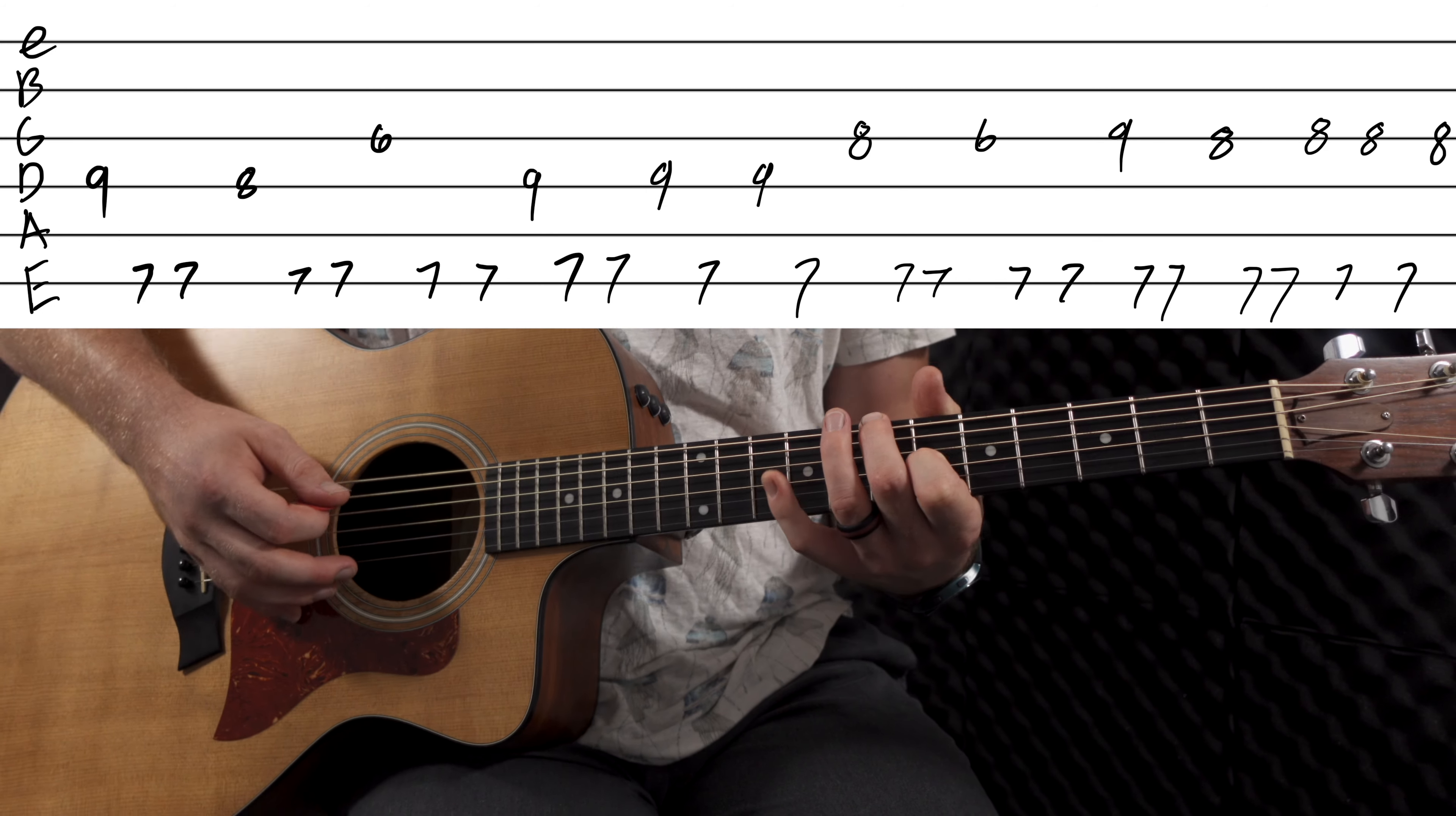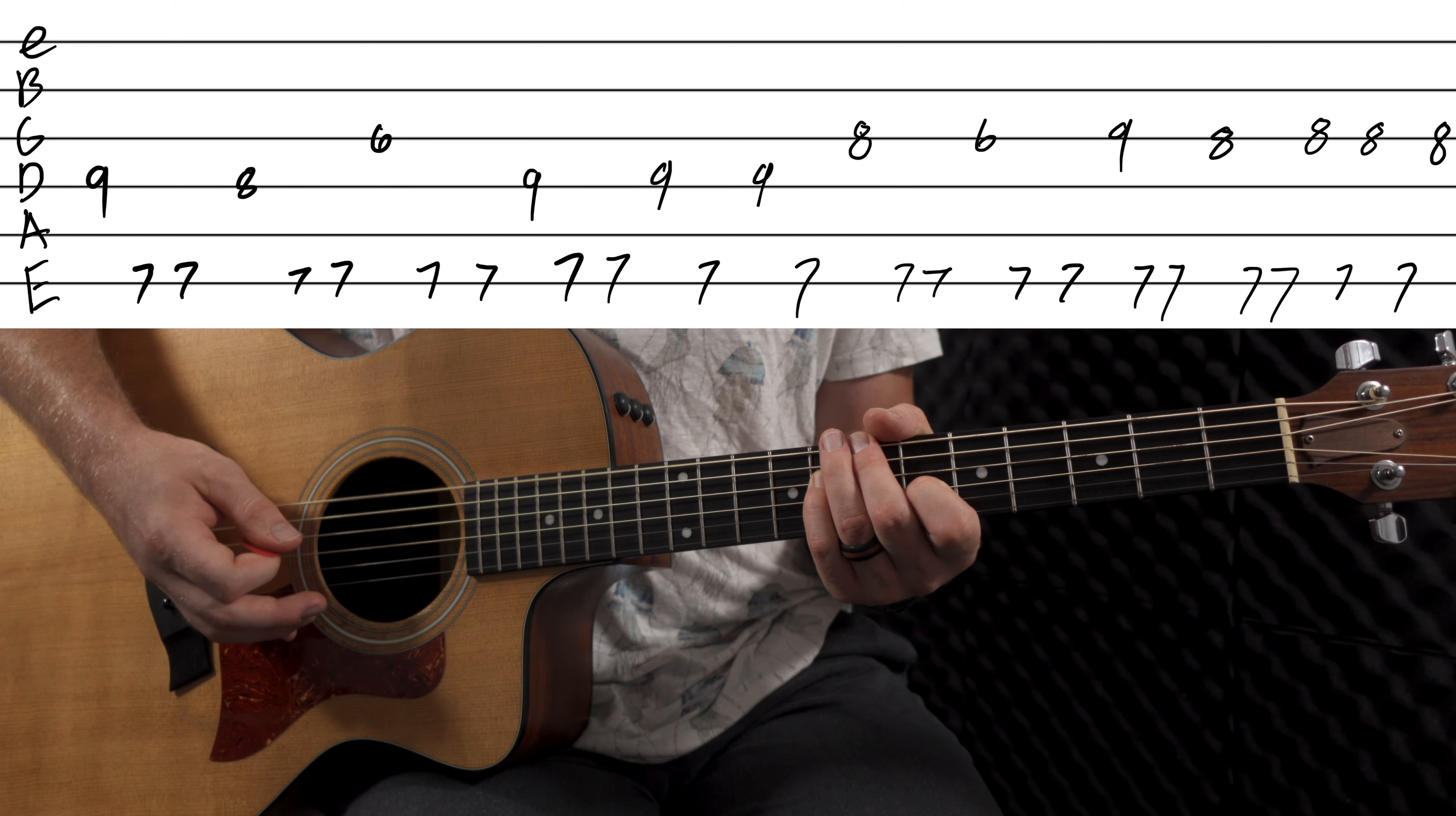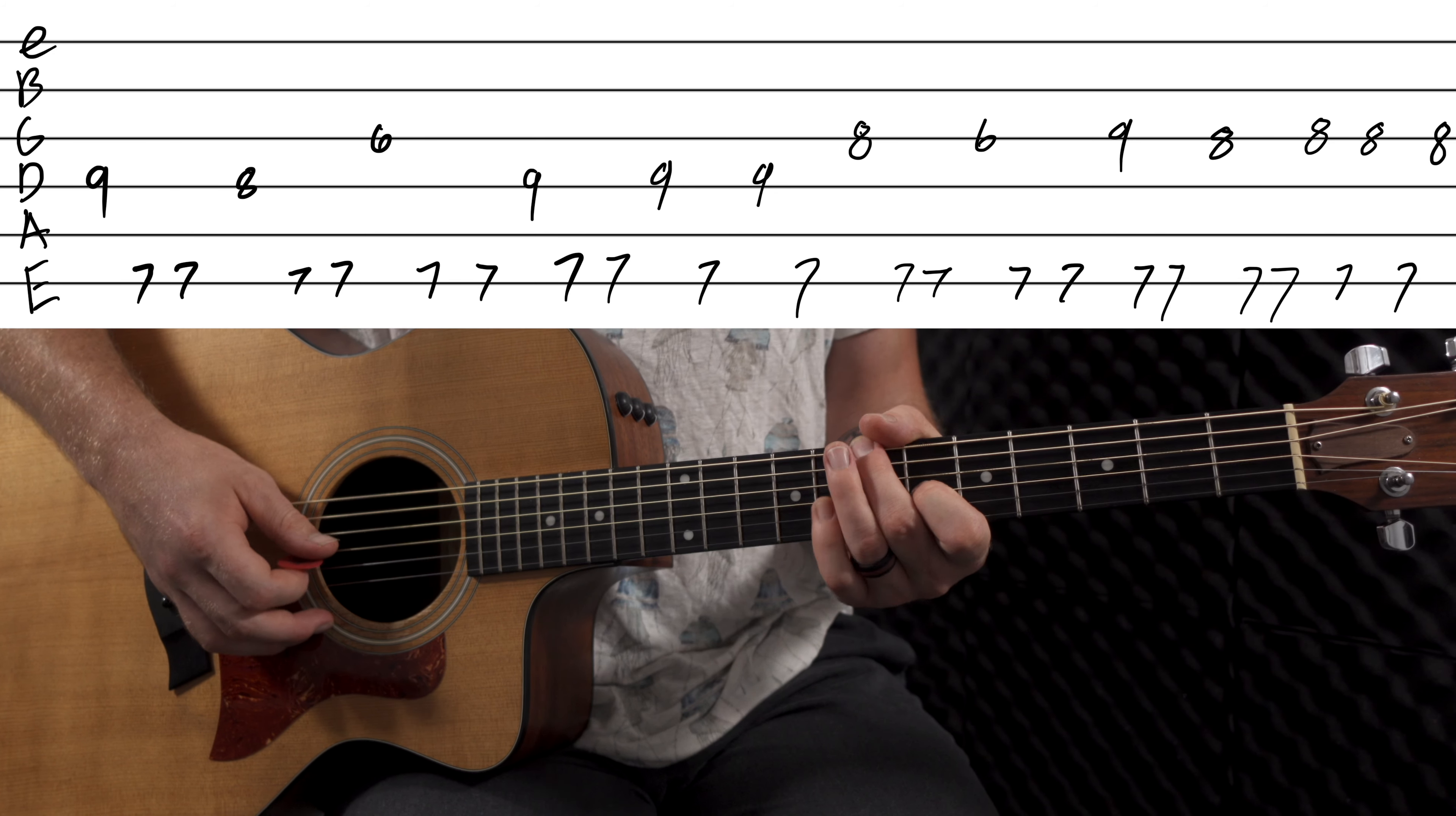And to start us off, it will be 9th fret on the D, palm muted on the 7th, then 8th, palm muted on the 7th, 6th, palm muted on the 7th, go back to the 9th.